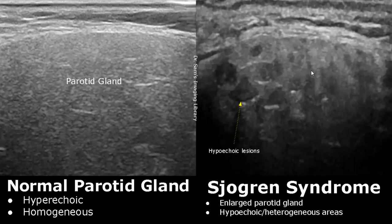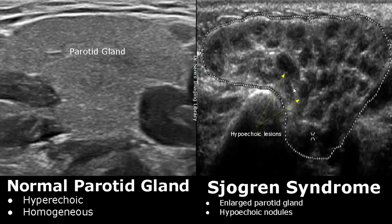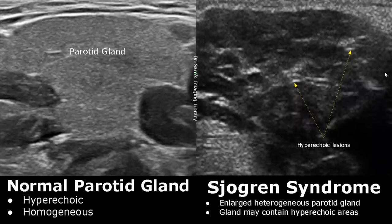Here is another image of Sjogren's syndrome. We see many hypoechoic nodules within an enlarged parotid gland. Usually the number of nodules increases over time. We may also find hyperechoic areas within the gland, which are usually due to fat deposition within the affected gland.